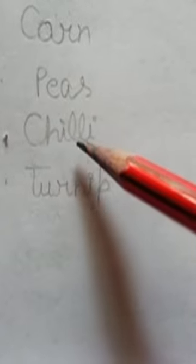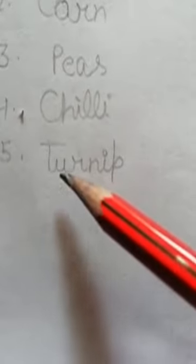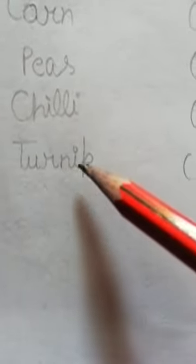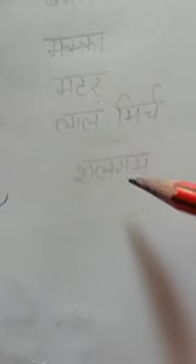Number four, C-H-I-L-L-I, chilli. Chilli means lal mirch. Number five, T-U-R-N-I-P, turnip. Turnip means salgam.